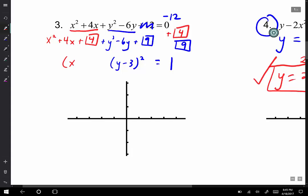And then there you have it, there's your circle. Our center is at (-2, 3) and our radius is 1, so it's a very small circle right there.